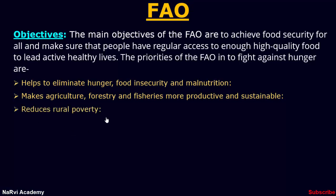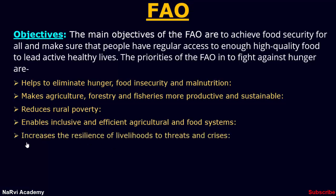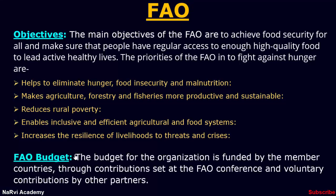It reduces rural poverty by helping rural poor gain access to the resources and services they need and encouraging rural employment and social protection to forge a path out of poverty. It enables inclusive and efficient agricultural and food systems by helping to build safe and efficient food systems that support smallholder agriculture and reduce poverty and hunger in rural areas. It increases the resilience of livelihoods to threats and crises by helping countries to prepare for natural and human-caused disasters by reducing their risk and enhancing the resilience of their food and agricultural systems.